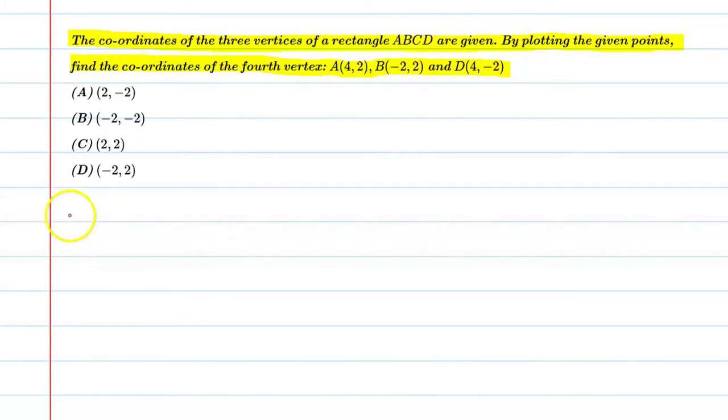First, we will write the given. Given the coordinates, the points are given here. So point A, it is 4,2. Point B, it is -2,2. And point D, it is 4,-2. All right.